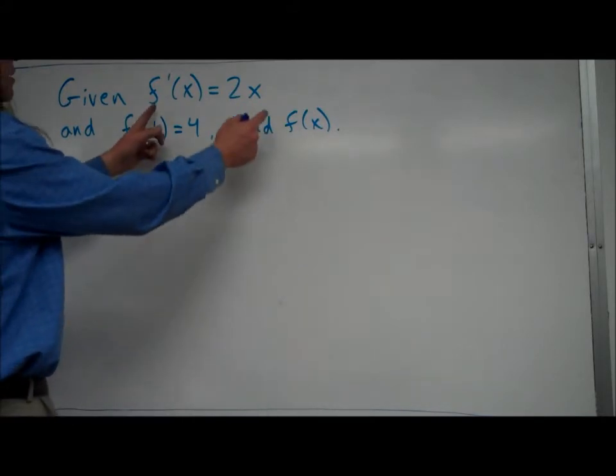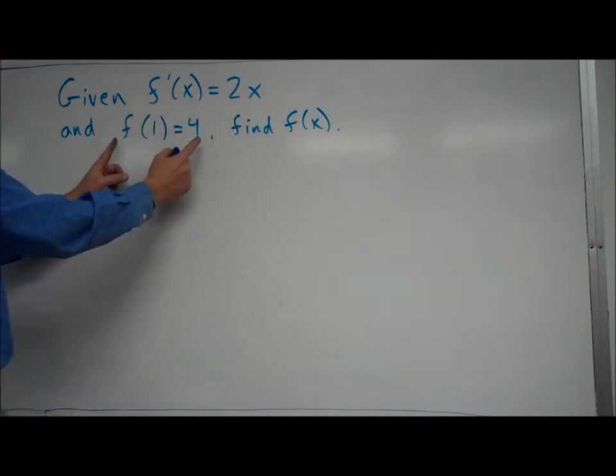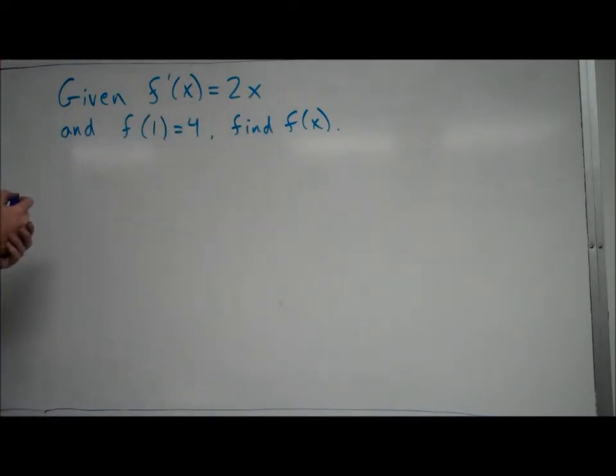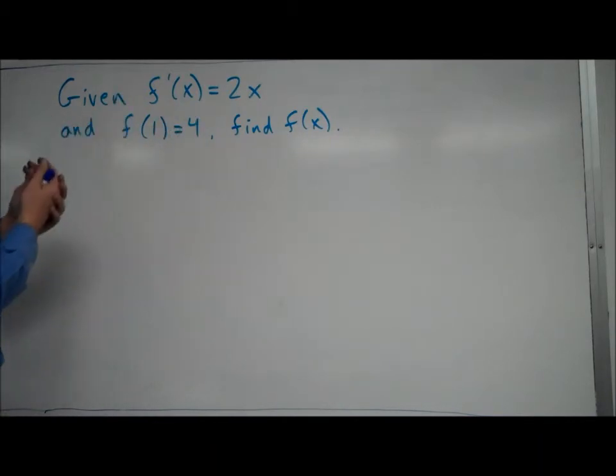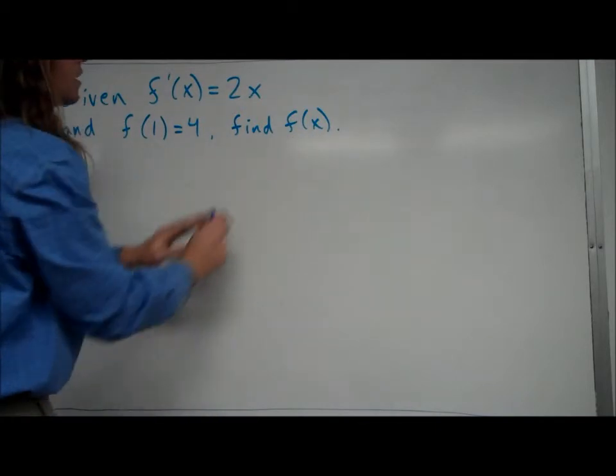In this case, I've given you f prime of x equals 2x. I've given you f of 1 equals 4. What this is called right here, this would be called an initial condition. It's giving you a point that is on the original function, or the solution to the differential equation. That's another way of saying the original function. And we want to use that to find f of x.